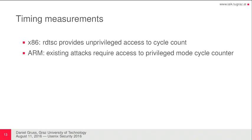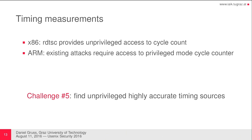A more difficult challenge was timing measurements. We checked all previous work on Android cache attacks and found that most of them use the privileged cycle counter — accessible only from kernel mode, or requiring a kernel module to unlock for user space. You can do that on a rooted Android phone, but if the phone is not rooted, you cannot perform these attacks. On x86, the RDTSC instruction is unprivileged. So challenge five is finding unprivileged, highly accurate timing sources, and we investigated a few new timing sources here.